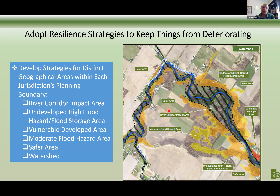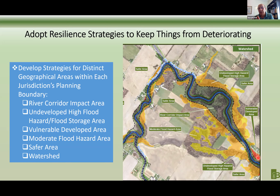The intention of this strategy is to preserve that storage and minimize any impact on it. Then we have vulnerable developed areas — areas where homes and businesses are already built within high-risk areas. Our strategies should be different here: to protect people, to reduce the pain and suffering, and to reduce the damages as much as we can. The strategies for this segment are unique to that type of intent.